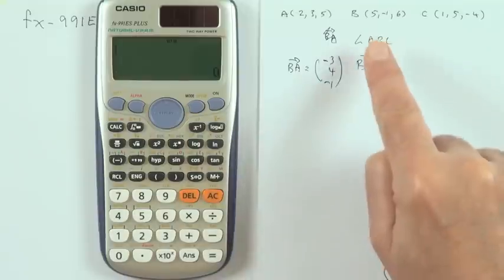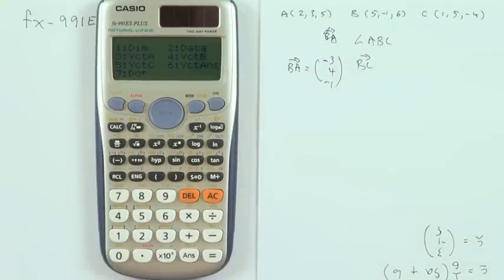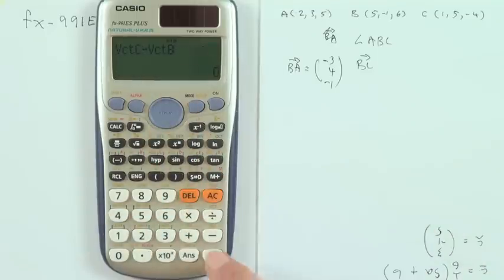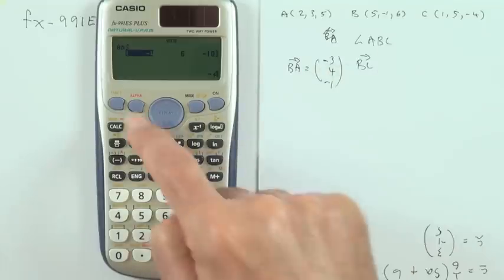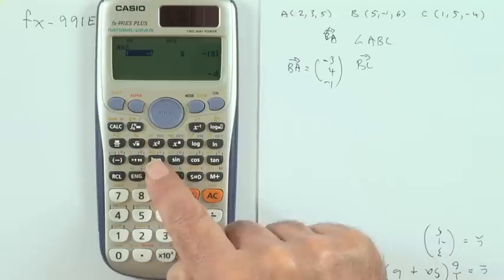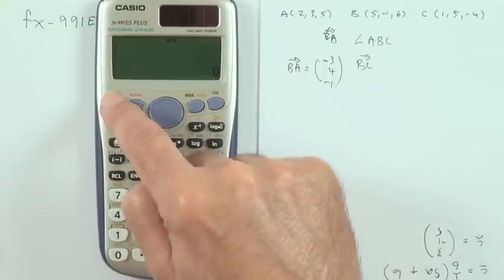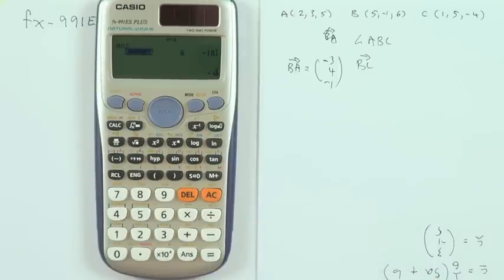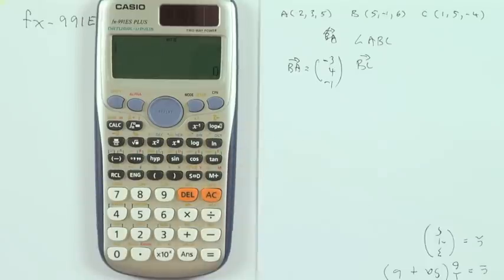I can do the same with the other one. If I want the vector BC, that'll be C minus B. Go into the vectors, that's vector 5 for C, minus, go into the vectors, pull out 4 for B, equals. There's its answer, so I can now store that in position C. Shift store, C is the red letter above the hyperbolic part, so that should be stored there.